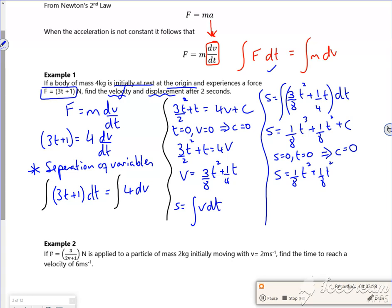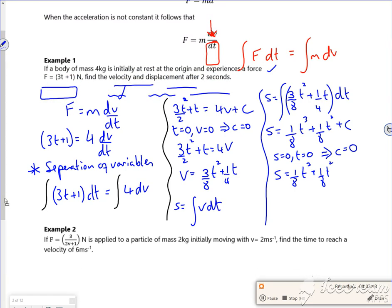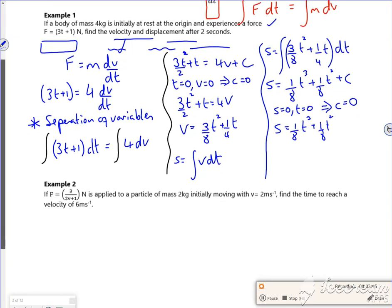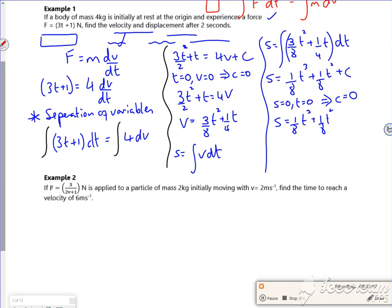I've not actually worked them out at 2 seconds. So for my velocity, oh that's going to be wrong place isn't it there. So for my velocity at 2, my velocity is 3 over 8 times 2 squared plus a quarter of 2, which gives me that's going to be...